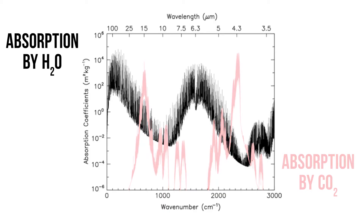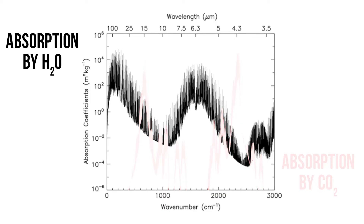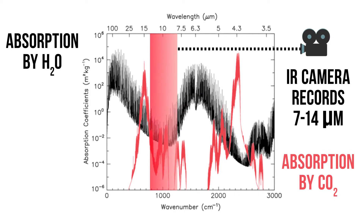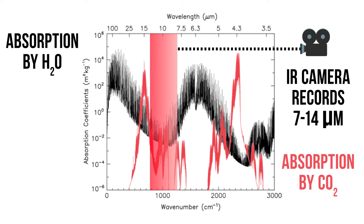Greenhouse gas molecules such as water vapour, carbon dioxide and methane absorb some wavelengths of electromagnetic radiation but not others. Some wavelengths, such as much of the Sun's light, can pass through the atmosphere. Other wavelengths are absorbed.